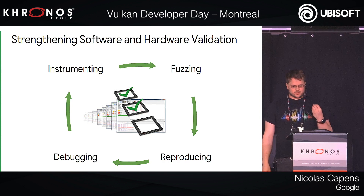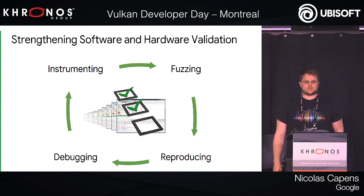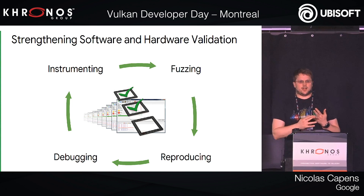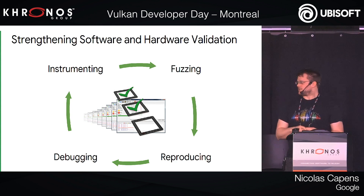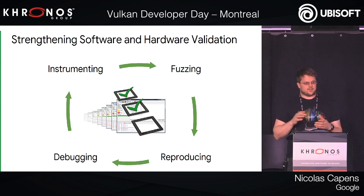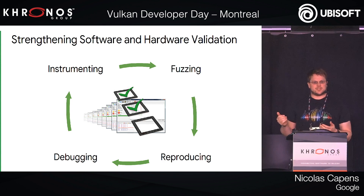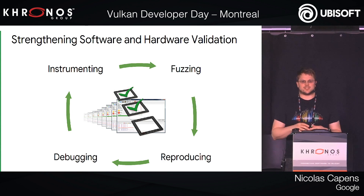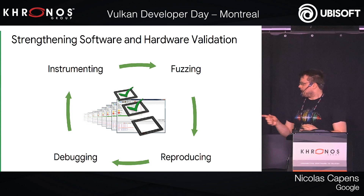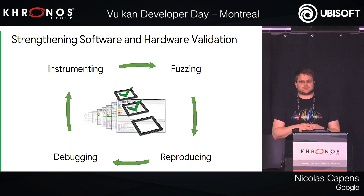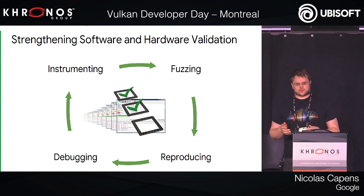SwiftShader is going to become a reference implementation of Vulkan, and this will have many advantages for the Vulkan ecosystem as a whole. You can instrument it with address sanitization, memory sanitization, and undefined behavior sanitization — things you can't easily get with a GPU implementation. With that instrumentation turned on, you can do fuzzing: having tests vary by themselves and find bugs for you. Once a bug is found, with a reference implementation that runs virtually everywhere and produces the exact same result, reproduction should be easy. SwiftShader can also be used for actual debugging of shaders, reinforcing the cycle of finding issues and improving the entire ecosystem.